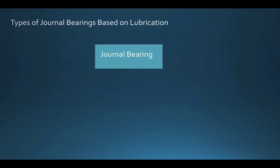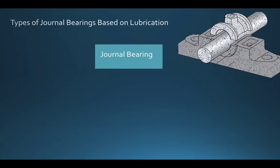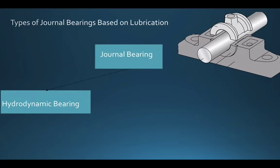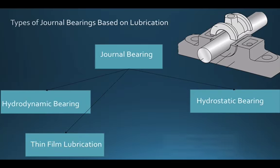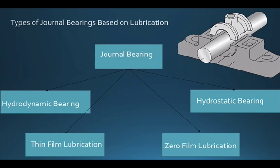The whole family of journal bearings is again divided into different categories based on the lubrication system used between the shaft and the fixed bearing. The first type is hydrodynamic bearing, the second is hydrostatic bearing, and in between we have thin film lubrication and zero film lubrication. I will explain how these bearings work and the difference between hydrodynamic and hydrostatic bearings in upcoming videos.